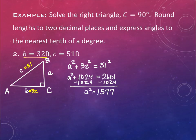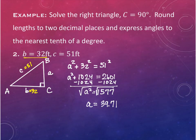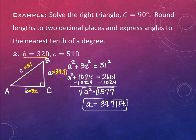The directions say to give the length to two decimal places, so we need to take a square root. We don't need the exact simplified form - just the approximation. Taking the square root of 1,577 gives us 39.71 feet. So this is our missing side - we've got all three sides now.